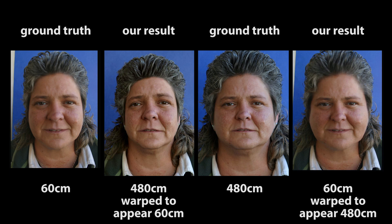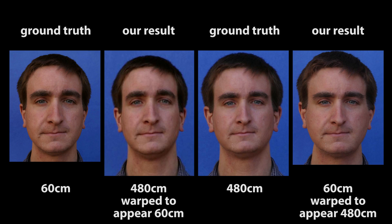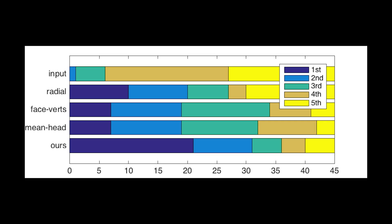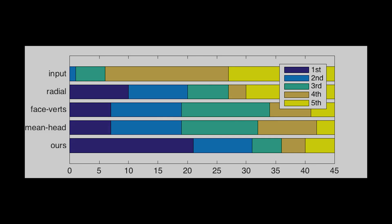These results can be compared to ground truth using optical flow magnitude across the image. We also ran the same comparison using several other simpler approaches. Even though the different photos were taken under uncontrolled lighting and the facial pose and expression of the subjects aren't consistent, we find that our method still outperforms all other methods.